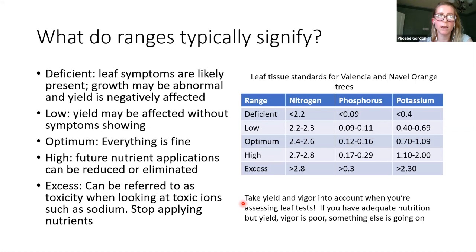You also want to take the appearance of the orchard into account when thinking about what results mean. If you have nutrient test results that look fine but have really poor vigor in your orchard, it probably means there's something else going on aside from nutrition.